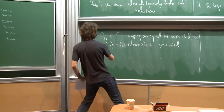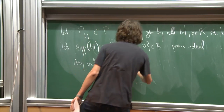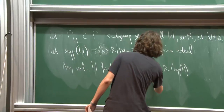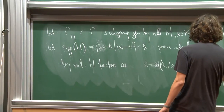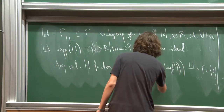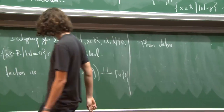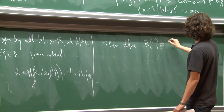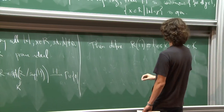Any valuation factors as: first project to the quotient by the support, then take the quotient field of this integral domain — call this k — and then there is a norm from k to Γ ∪ {0}. The norm gives rise to a residue field k, and additionally to a valuation subring of k, which is the set of all x in k such that |x| ≤ 1. This subset of k is a valuation subring.